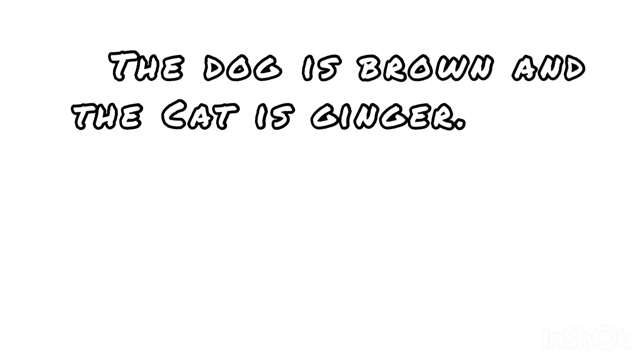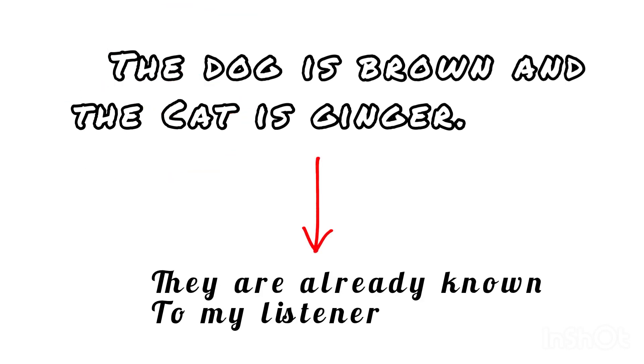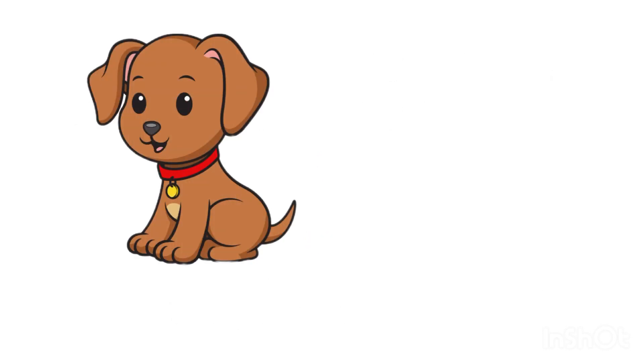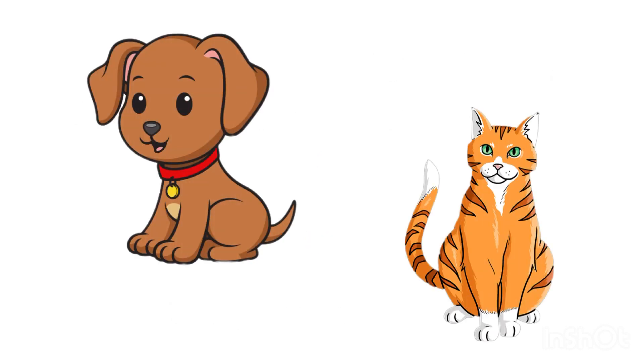In the second sentence, I said the dog and the cat because they're already known to my listener. The listener knows which dog and which cat I am talking about.